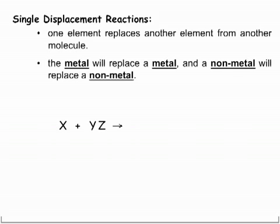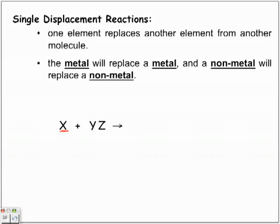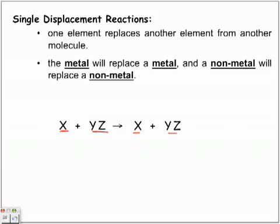We have one molecule and another one. One of these elements is going to switch with one another in our final reaction. In the product section, the X replaced the Y, leaving Y single. Originally this X — we could treat it as a metal — replaced the other metal in the reaction.